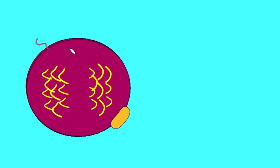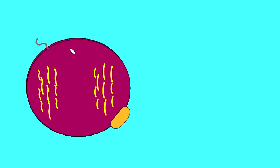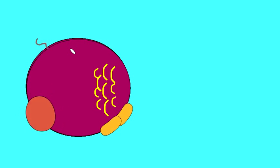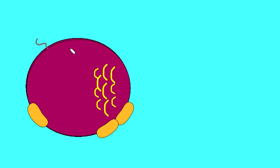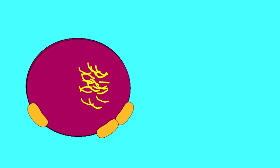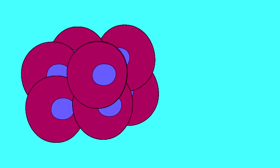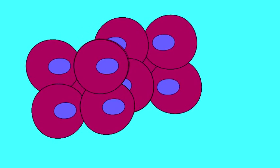It sometimes comes to pass, however, that some of these cells, once the zygote has begun to divide, break away from the other cells, so that there are two separate masses having been derived from the same zygote. At first, embryonic cells are totipotent, capable of forming an entire individual.